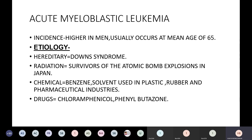AML is commonly seen in men around the age of 50 to 65 years. Etiological factors include genetic conditions like Down syndrome, radiation particularly from atomic bomb survivors in Japan, chemicals like benzene used in plastic, rubber, and pharmaceutical industries, and drugs like chloramphenicol and phenylbutazone.